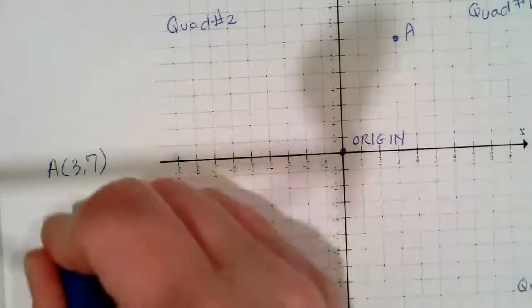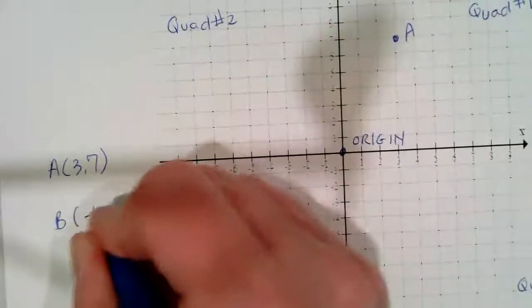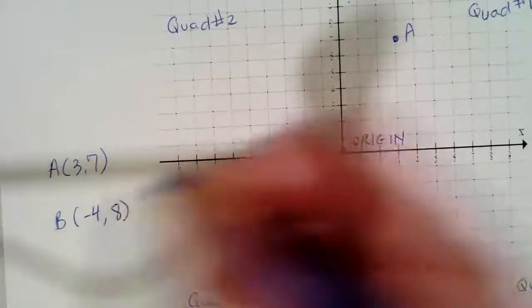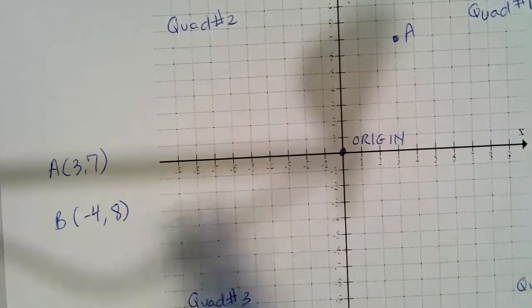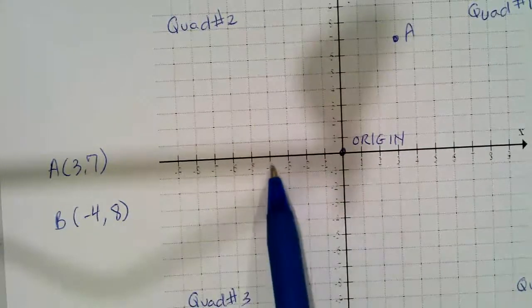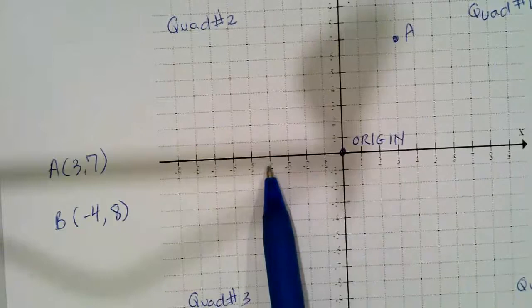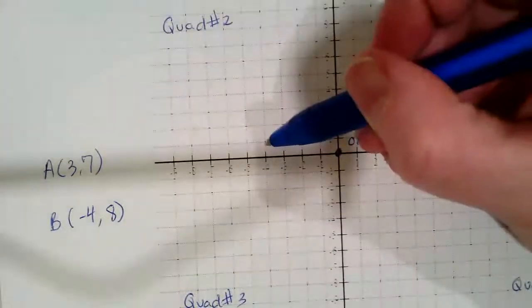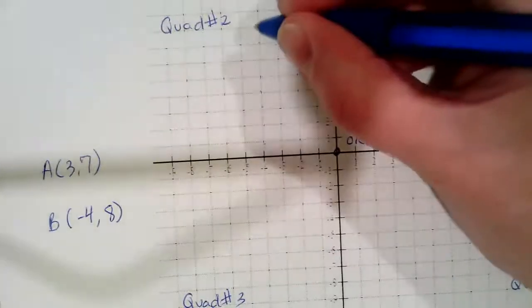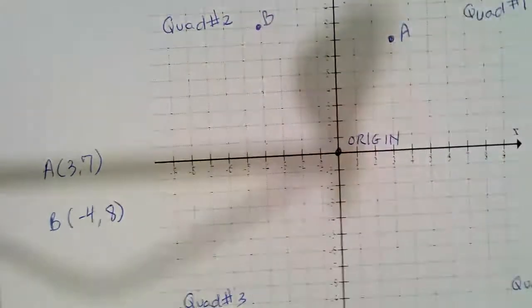For point B, it's going to have the coordinates (-4, 8). So what we're going to do is the first coordinate is on the X axis. So on the X axis, you find the -4. And the Y counterpart is 8. So you count up eight squares. One, two, three, four, five, six, seven, eight. And there is the coordinates of B.